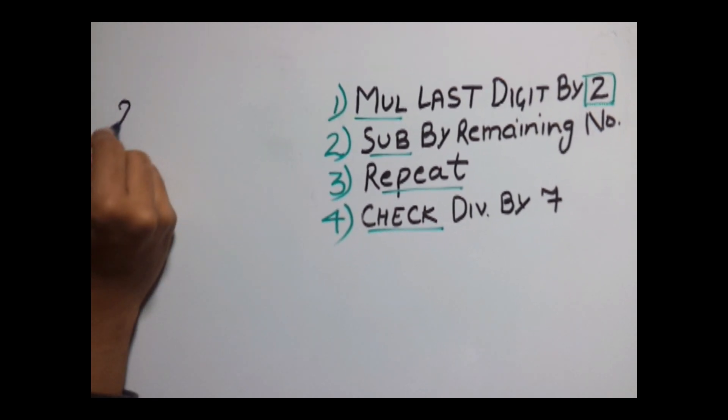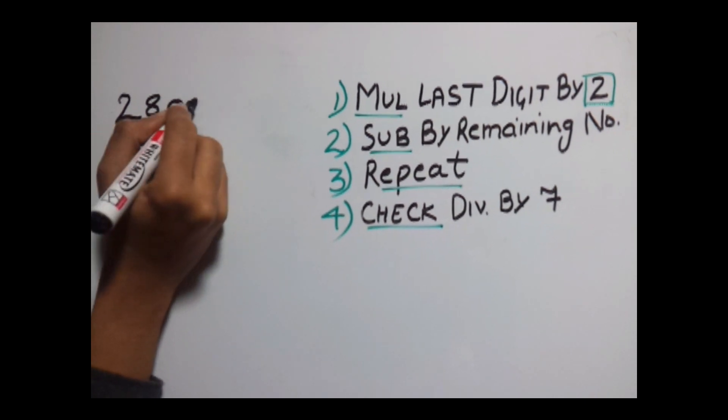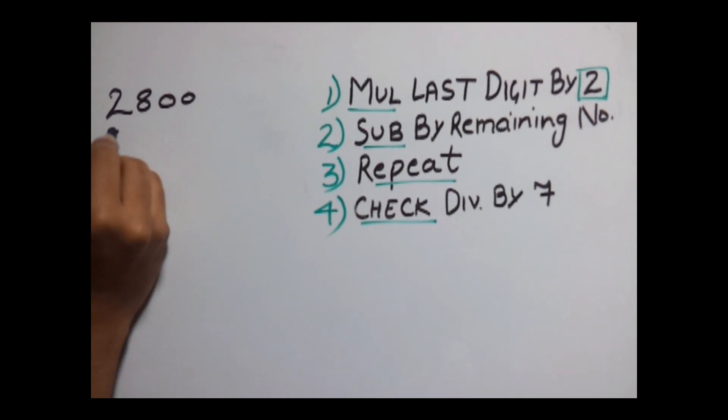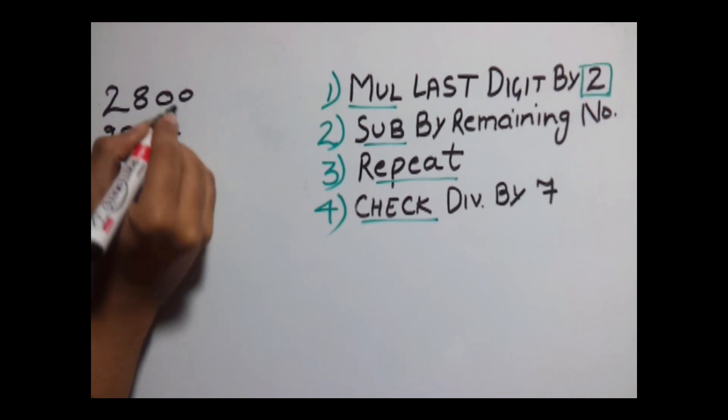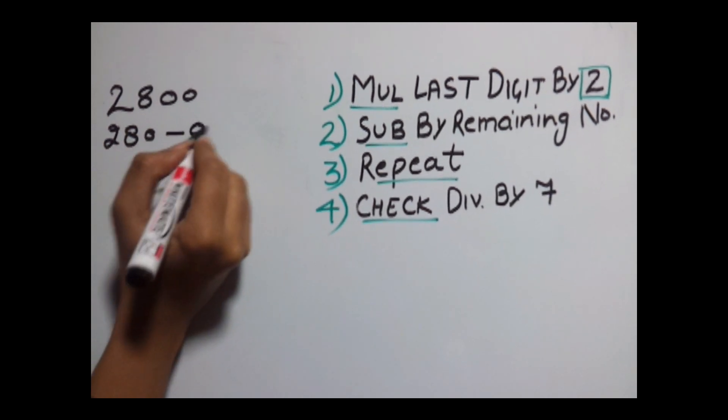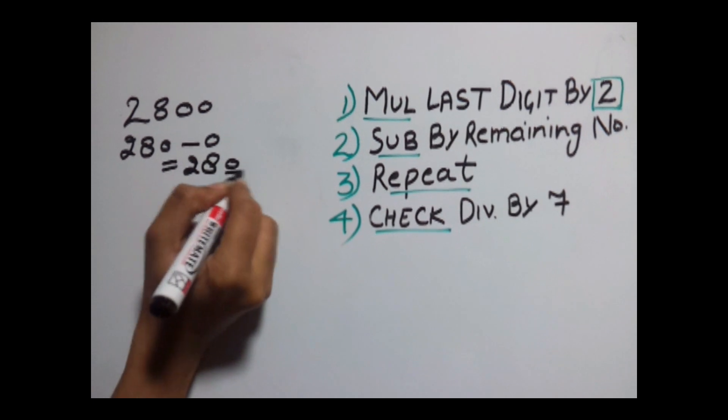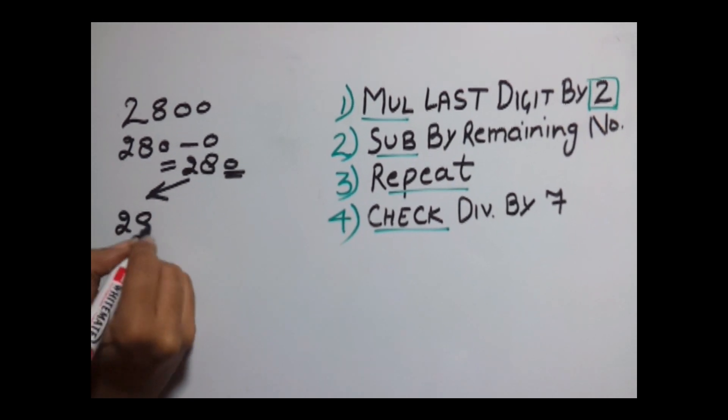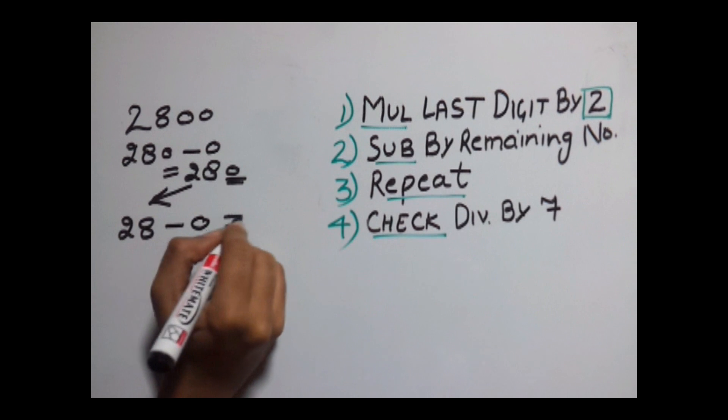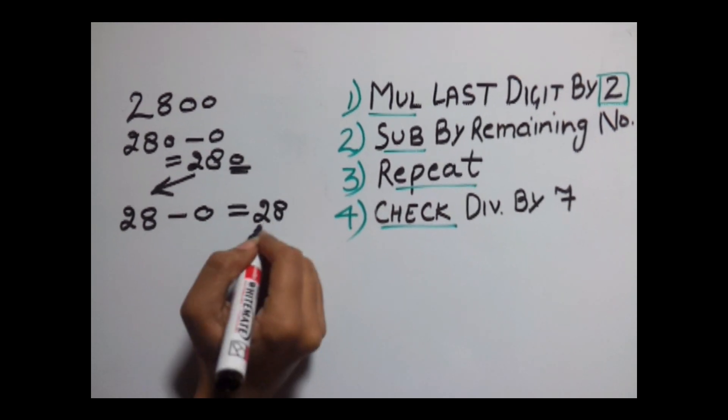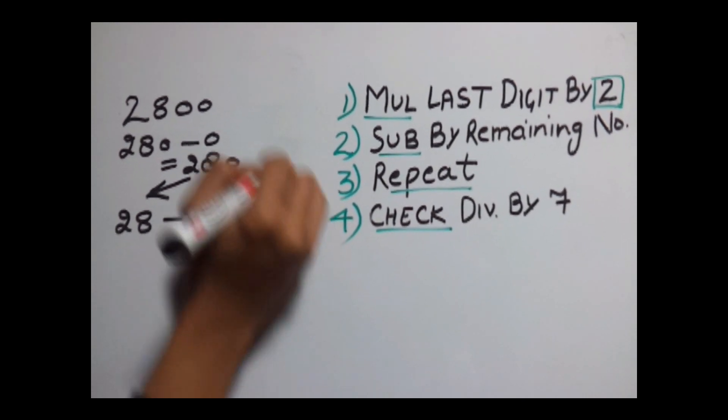Let's quickly check whether 2800 is divisible by 7 or not. So 280 minus 0 into 2 is 0. Again repeating this gives us 280. Again repeating this gives us 28 minus 0 into 2 is 0, which is 28. Is 28 divisible by 7? Yes.